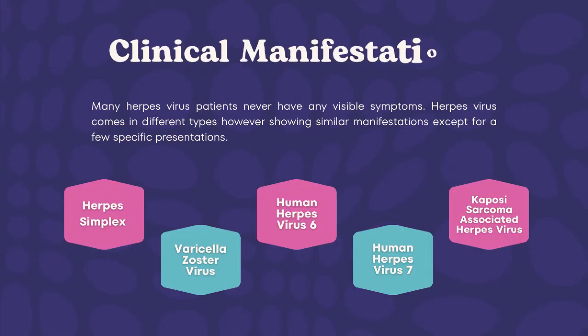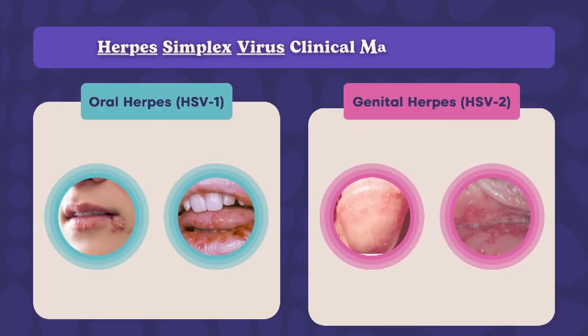Herpes virus patients may not present any visible physical symptoms; however, there are some presentations a patient may encounter. HSV is divided into type 1 and type 2. HSV type 1, also known as oral herpes, presents blisters on the lips, mouth, cheeks, or tongue. HSV type 2 forms sores in the genitalia — on the penis, vagina, buttocks, or anus — and can lead to urinary problems, including a burning sensation when urinating.